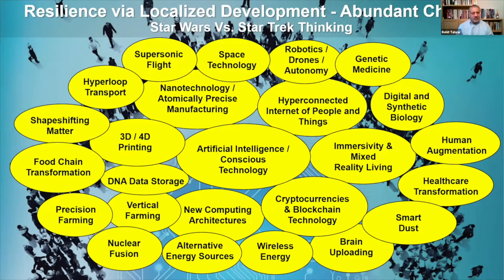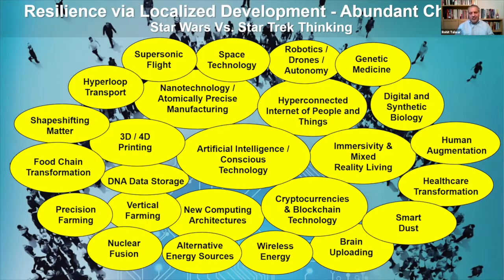We've been used to abundance in the distribution of information — virtually free via the internet. Some technologies we're talking about will give us almost free transport with hyperloop, almost free food with vertical farming, almost free materials production with new materials technologies. These are going to lead to very big shifts in business models, with huge opportunities for professional services firms helping companies develop and apply these technologies, work out the legalities, roll them out, and scale them. This also creates a whole construction opportunity around building the right facilities for each technology type.